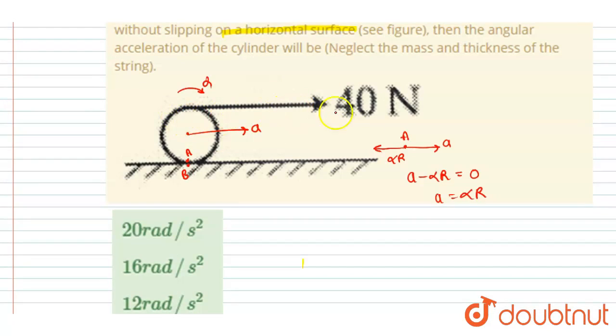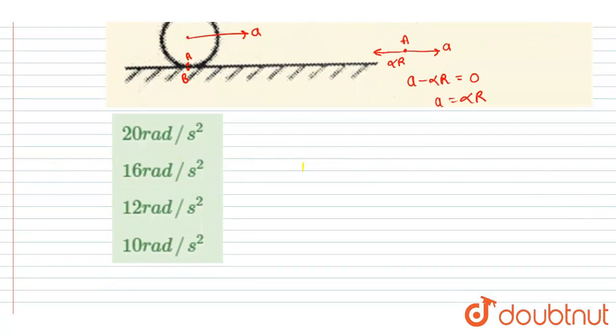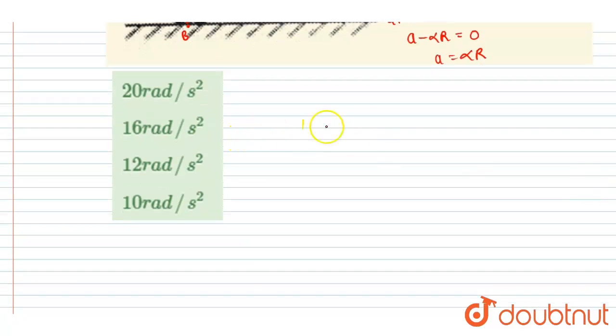So from here you will get alpha*r equals to a. Very simple. Now it is given that a force is applied like this, right? So you have to find out the alpha. So let us write down, let us first draw the FBD.